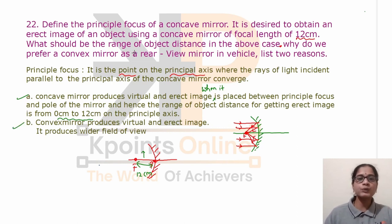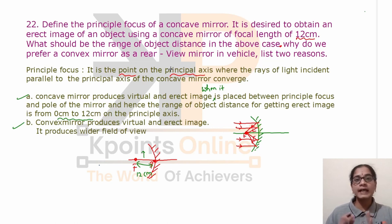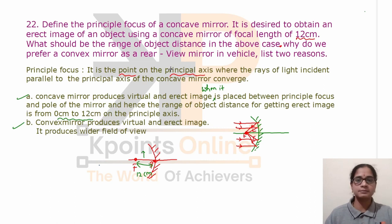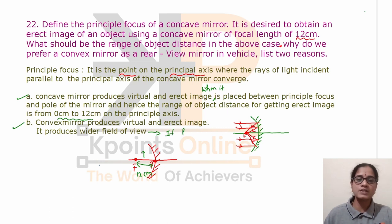Why do we prefer a convex mirror as a rear view mirror in vehicles? Two reasons: first, convex mirrors produce virtual and erect images; second, they provide a wider field of view — we can see the full size of distant objects on the mirror. As it covers a wider field of view, convex mirrors are preferred for vehicles.